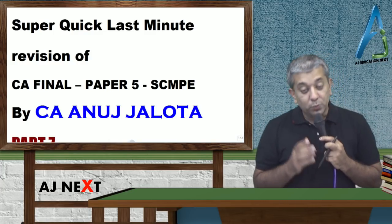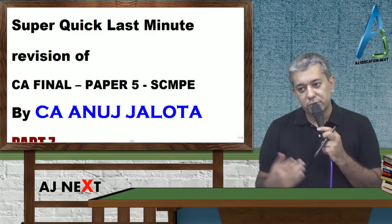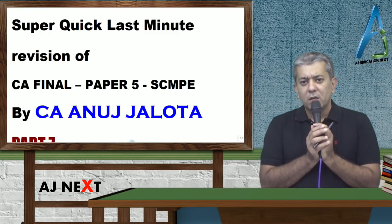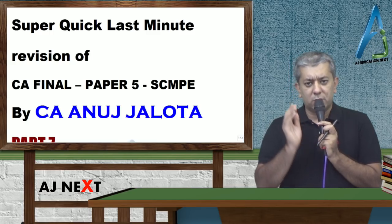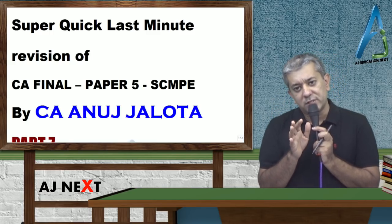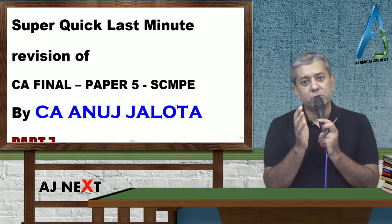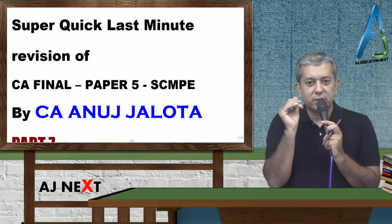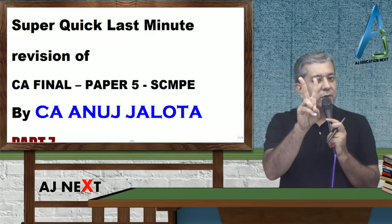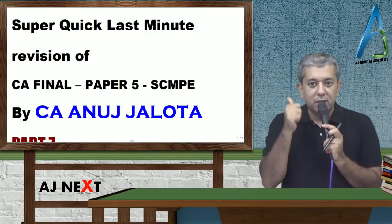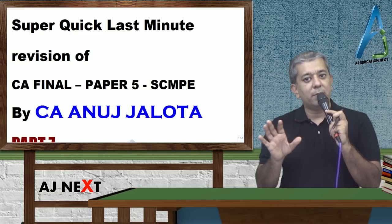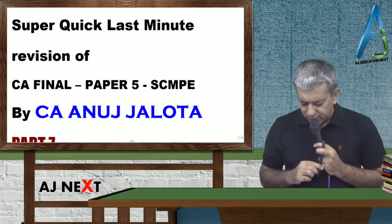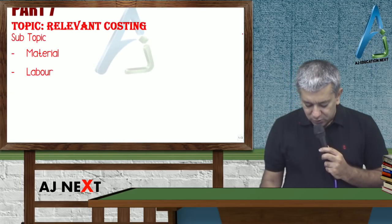Hi guys, welcome to super quick revision Next series. Today we are going to be starting with relevant costing revision. Relevant costing is an important part - if an offer comes, you have to decide whether to accept or reject it. For that you need the relevant cost. Obviously cost can be of many types. In this lecture I am trying to cover two of them: one is material, the other is labor. We'll focus only on material and labor, nothing else as such.